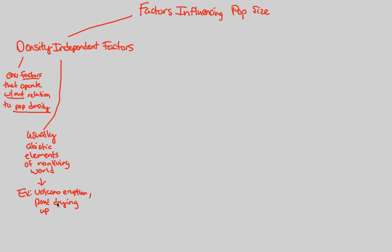A pond drying up is another good example of a density-independent factor. That dried-up pond will not care about the density of the fish within the population. All that will happen is that the population size will definitely decrease because of the lack of water and thus the death of the fish. These are abiotic elements that don't care what is living.